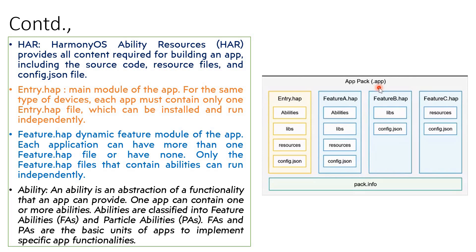HAR — HarmonyOS Ability Resources — will provide all the content required for building the app, which can include the source code, the resource files, and the config.json file. Now, entry.hap — as the name suggests, it is the main module of the app. For the same type of devices, each app will have only one entry.hap file, it cannot be duplicated, and it can be installed and run independently.